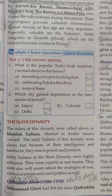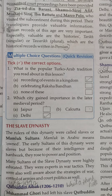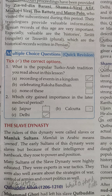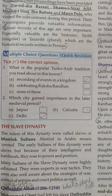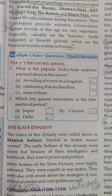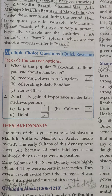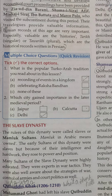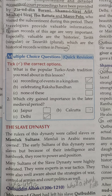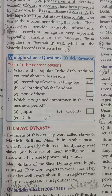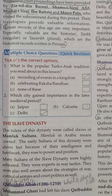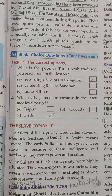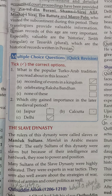The first of the five dynasties is the Slave Dynasty. The rulers of this dynasty were called slaves — they bore the names of slaves. Through intelligence and hard work, they rose to power and position. Many sultans of the Slave Dynasty were highly educated and very expert in war tactics. They were also well aware of the strategies of war, control of armies, and court policies.